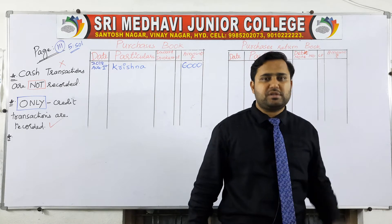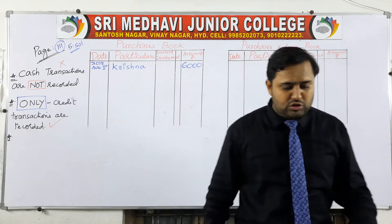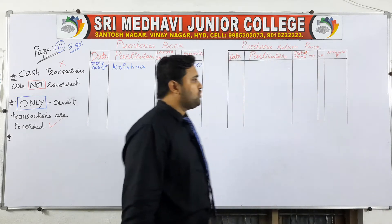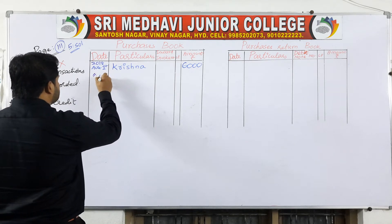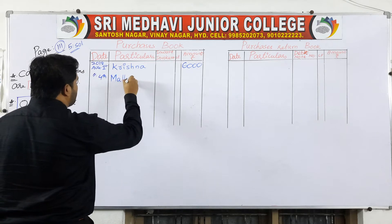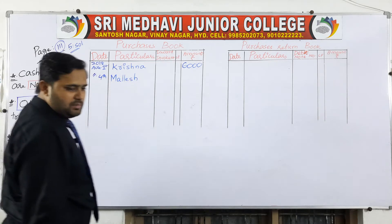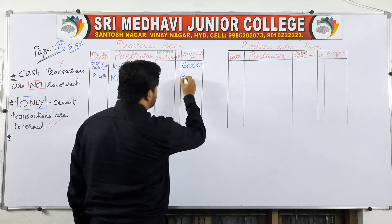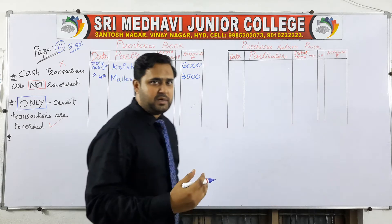The next transaction: 4th August 2018 — goods purchased from Malish for 3,500 rupees. So on 4th August, the cost of goods purchased from Malish is 3,500 rupees. Record this in the purchase book.